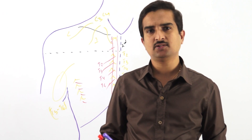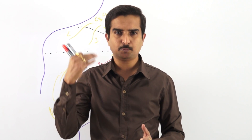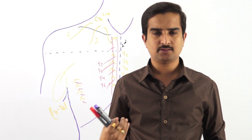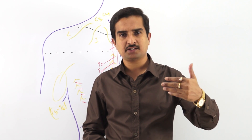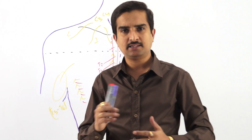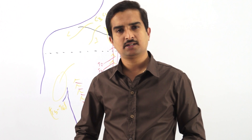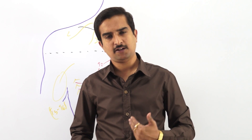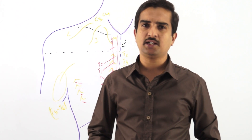The cutaneous nerves are of three groups: supraclavicular, anterior cutaneous, and lateral cutaneous. The supraclavicular group of cutaneous nerves is derived from C3 and C4. The anterior as well as the lateral cutaneous nerves are derived mainly from T2, T3, T4, T5, and T6.